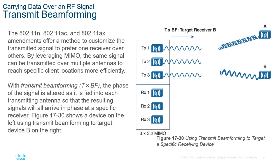Transmit beamforming (TxBF), introduced in 802.11ac and ax, customizes the transmitted signal to prefer one receiver over another. Leveraging MIMO, the same signals can be transmitted over multiple antennas to reach specific client locations more effectively. With TxBF, the phase of the signal is altered as it is fed into each transmitting antenna so that the resulting signals arrive in phase at specific receivers — for example, directing signals toward Receiver A versus Receiver B to ensure proper convergence.